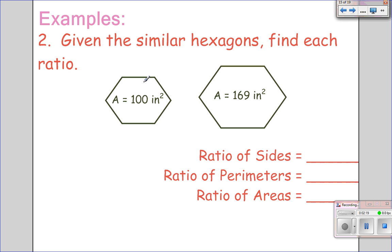So, looking here, it tells me the area is 100 and the area is 169. So, I start by saying that the area ratio is 100 over 169. Now, to go from your side ratio to your area ratio, you had to square them. So, how do you think you go backwards now? You have to take the square root.